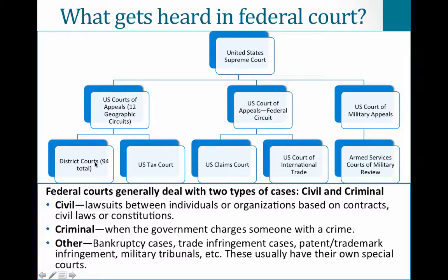These courts are geographic. There is at least one district court in each state; some states have two, and some districts have divisions. In Michigan, we have an eastern district and a western district, and the eastern district has a northern division and a southern division. There are 12 appeals courts throughout the country, and then up to the Supreme Court. There are also specialty courts like Tax Court, Claims Court, International Trade Court, and the Armed Services courts.